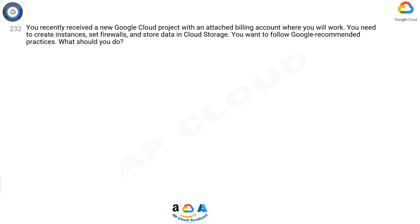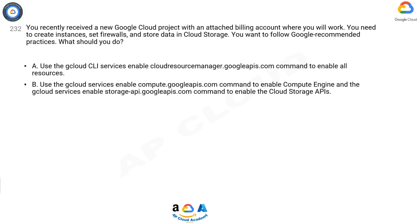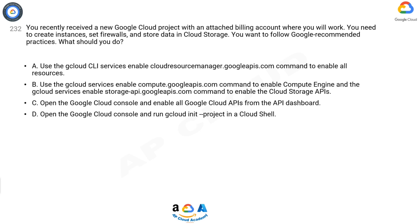Question 232. You recently received a new Google Cloud project with an attached billing account where you will work. You need to create instances, set firewalls, and store data in Cloud Storage. You want to follow Google recommended practices. What should you do? A: Use the Cloud CLI services enable cloud resource manager.googleapis.com command to enable all resources. B: Use the Cloud services enable compute.googleapis.com command to enable Compute Engine and the